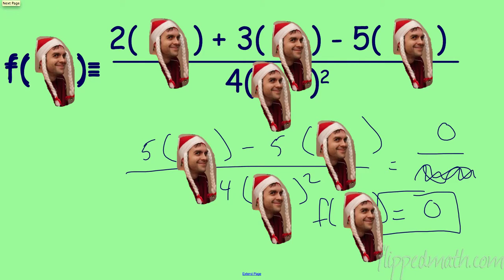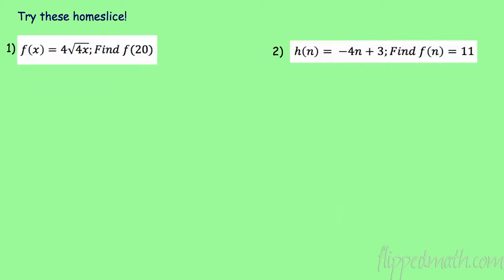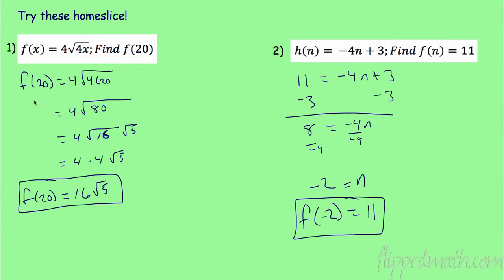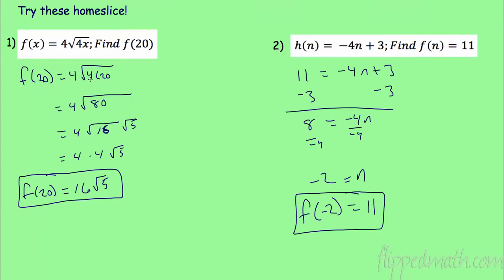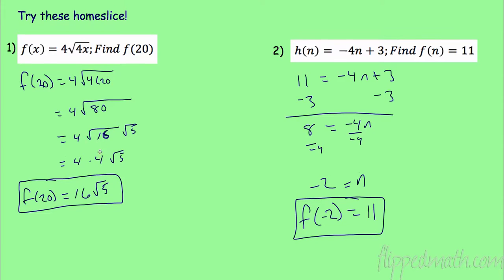Let's check the practice answers. For the first one, plug in x = 20: 4 × 20 = 80, and √80 = √16 × √5 = 4√5, then times 4 gives 16√5. So f(20) = 16√5. For the second one, h(n) = 11: subtract 3 from both sides to get 8 = -4n, divide to get n = -2. In function notation: h(-2) = 11.